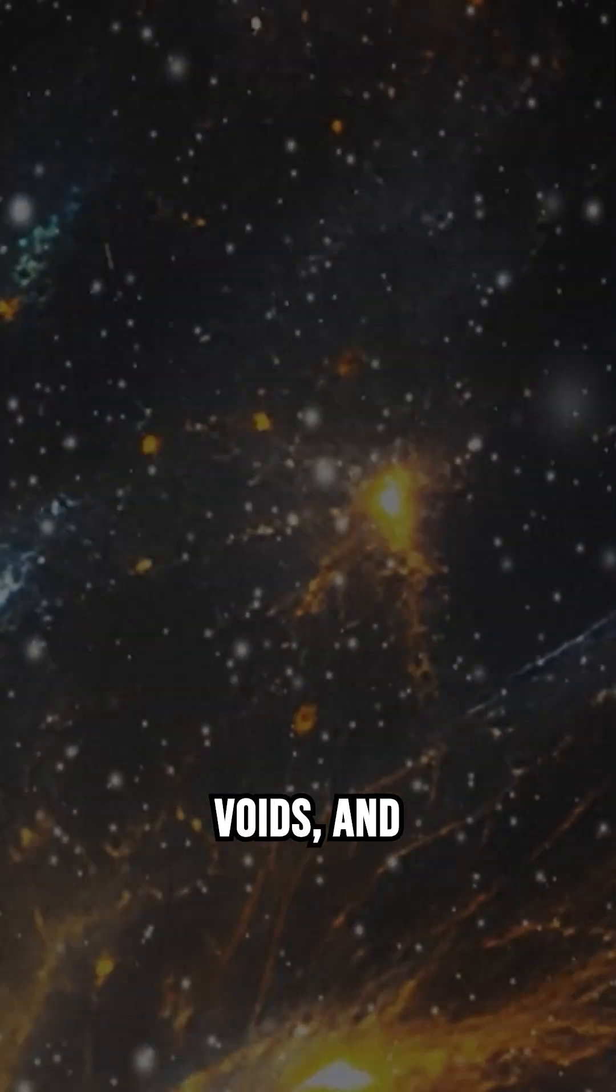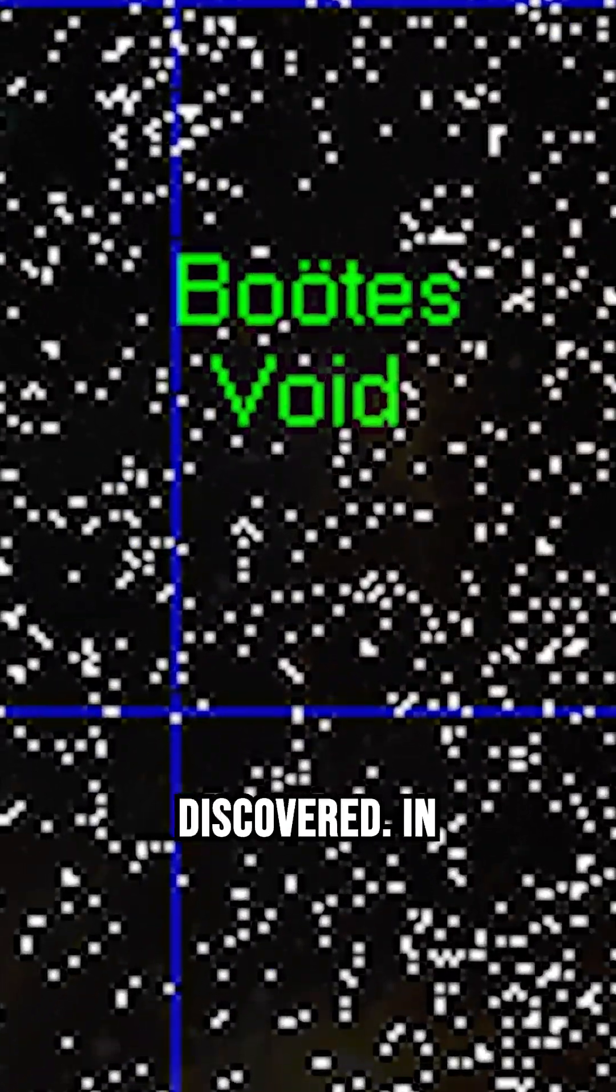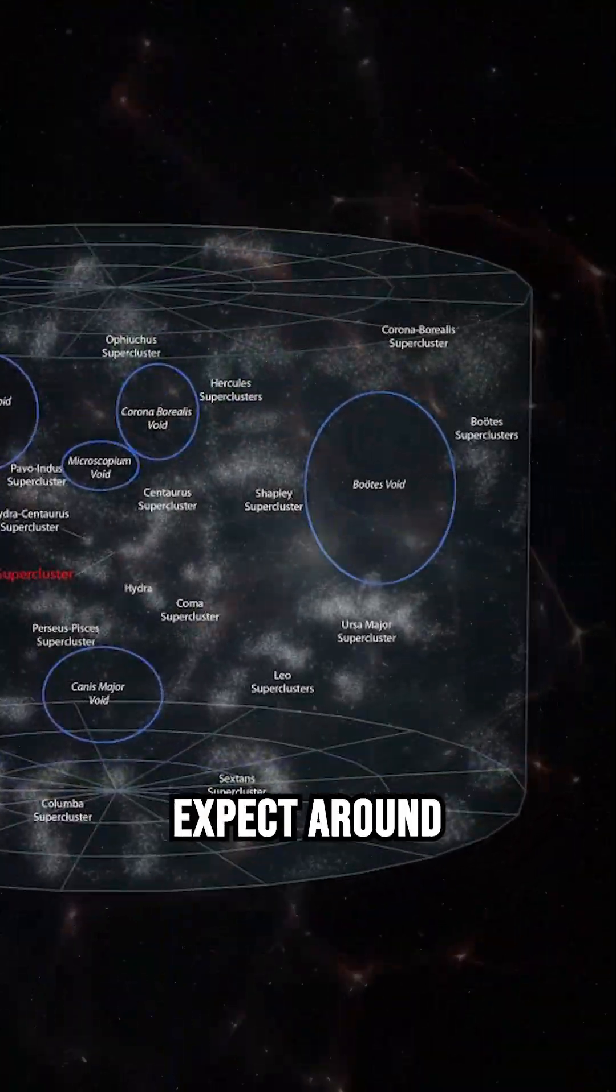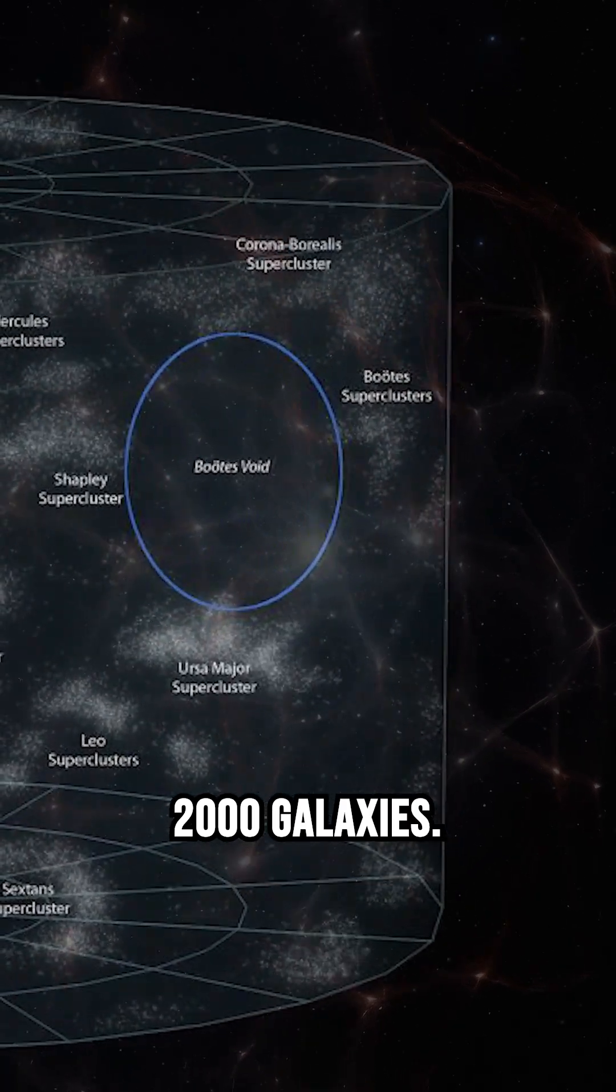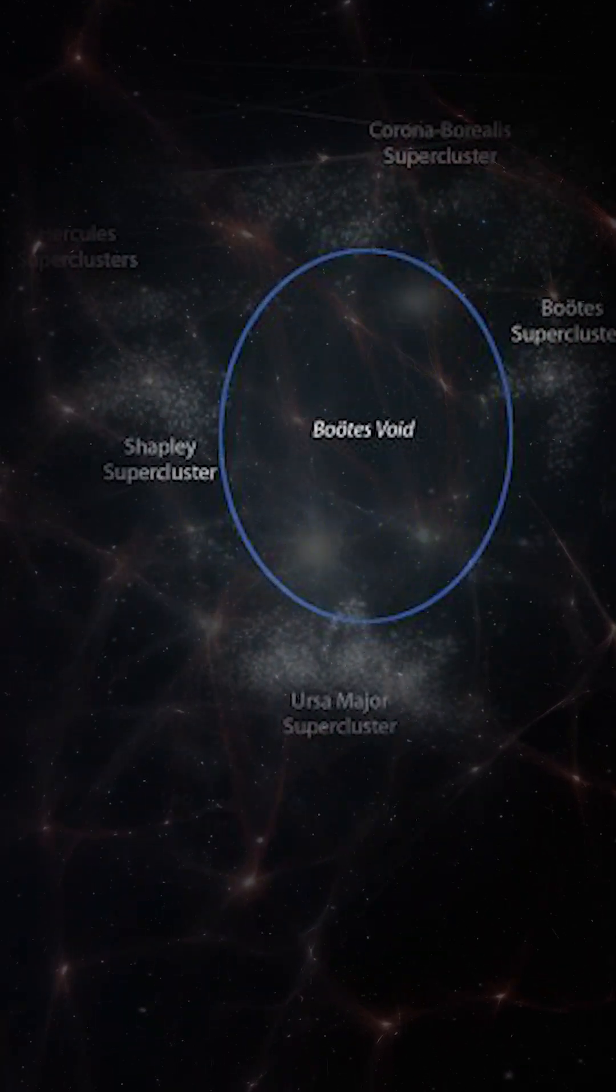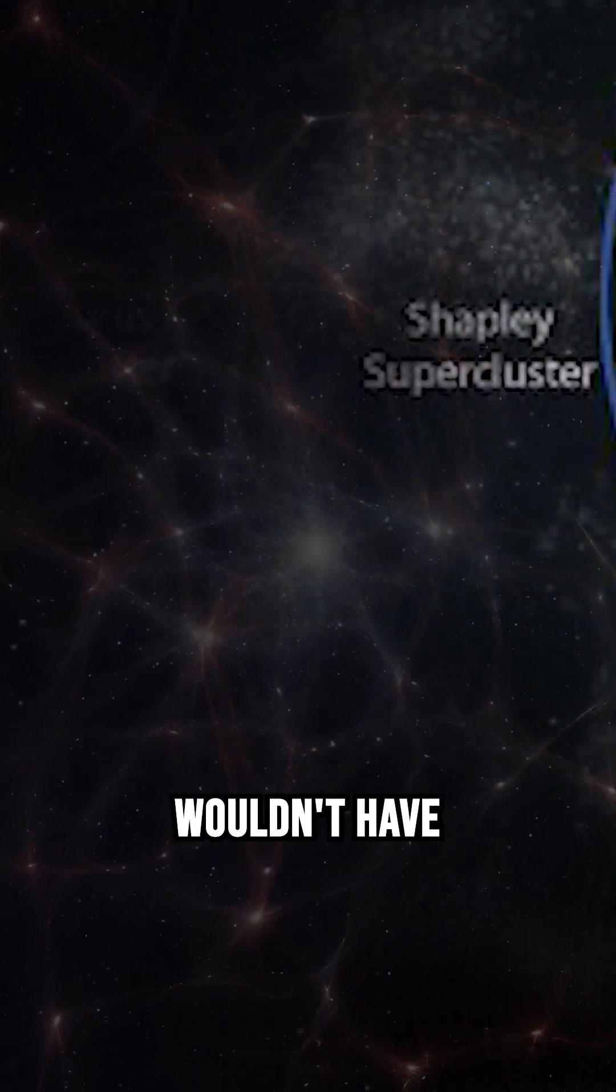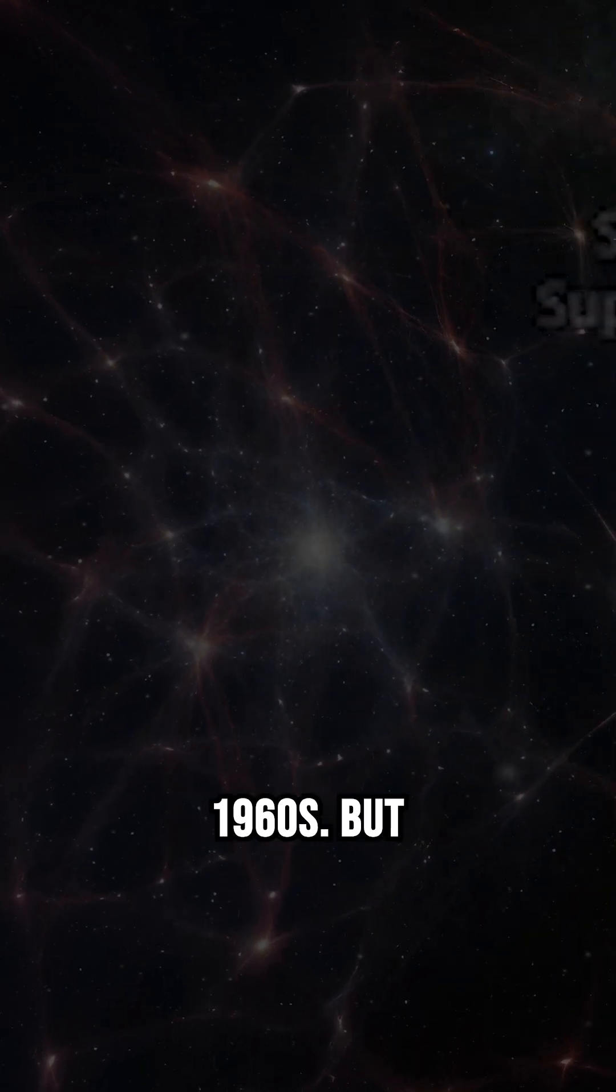These are called voids, and Boötes Void is one of the largest ever discovered. In a region this size, we'd expect around 2,000 galaxies. Boötes Void has only 60, so thinly spread that if we lived there, we wouldn't have discovered other galaxies until the 1960s.